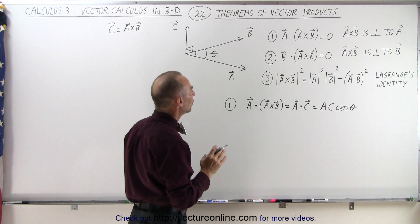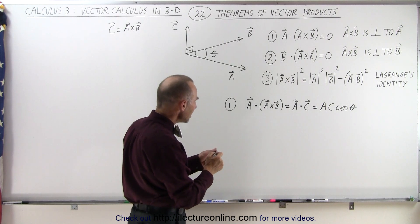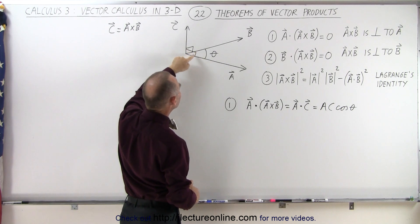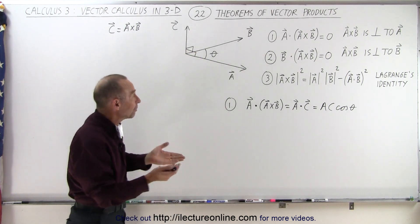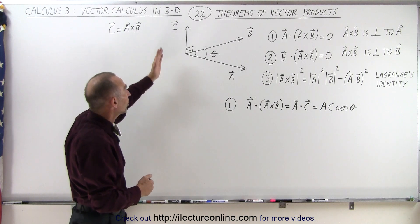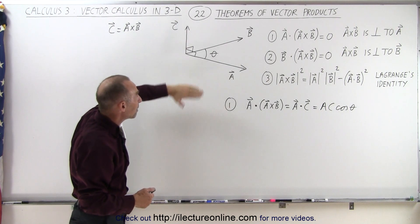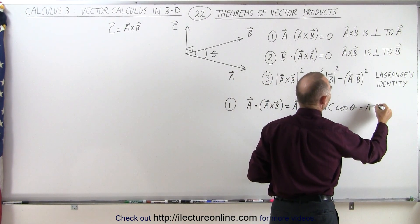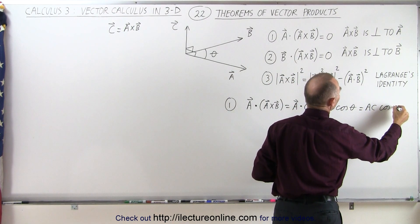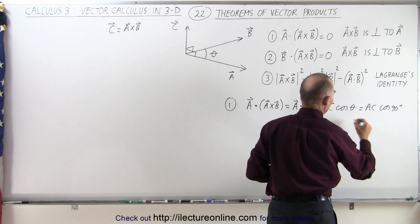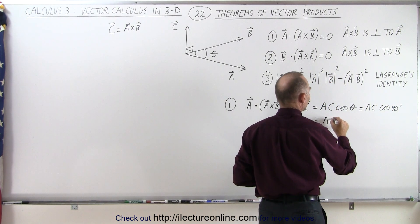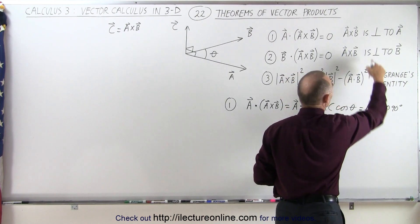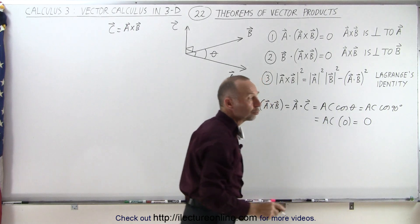Looking at a and c, the angle between them must be 90 degrees because a and c must be perpendicular — the resultant c must be perpendicular to the plane made by a and b. Therefore this equals |a| times |c| times cosine of 90 degrees, which is zero, showing that this is indeed a true statement.